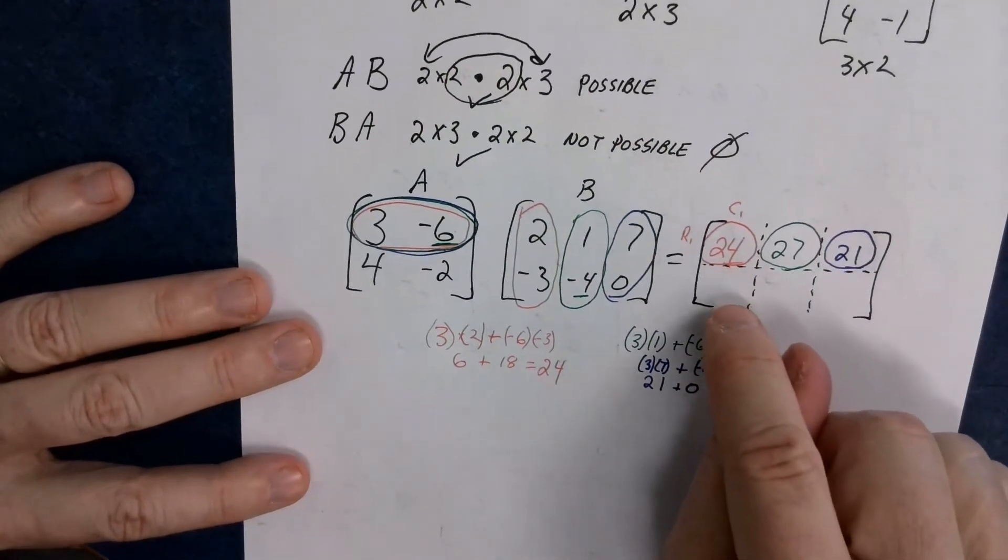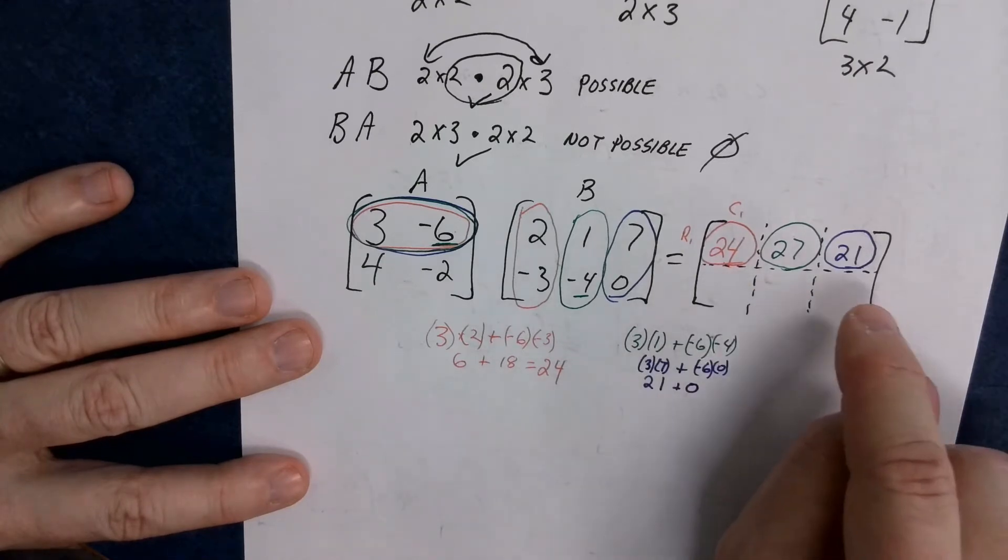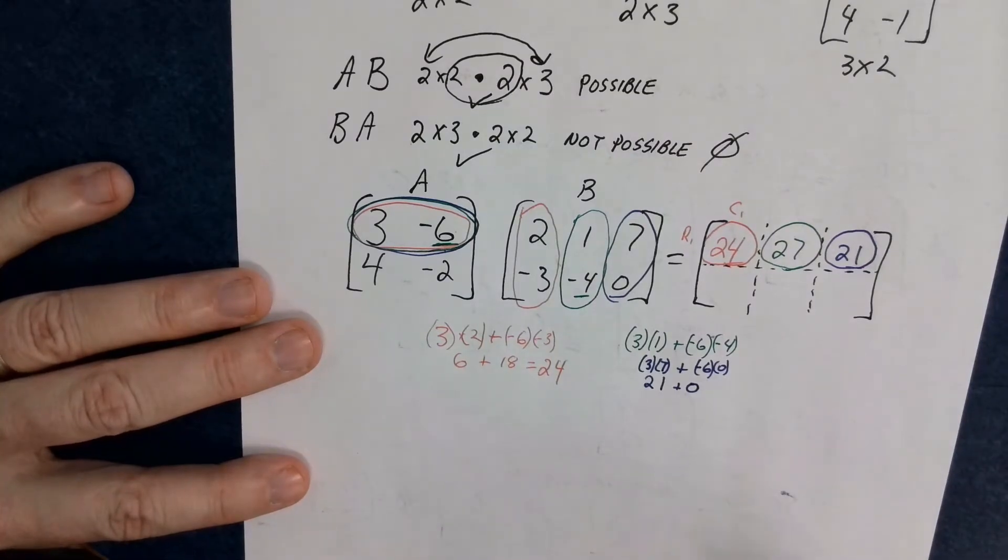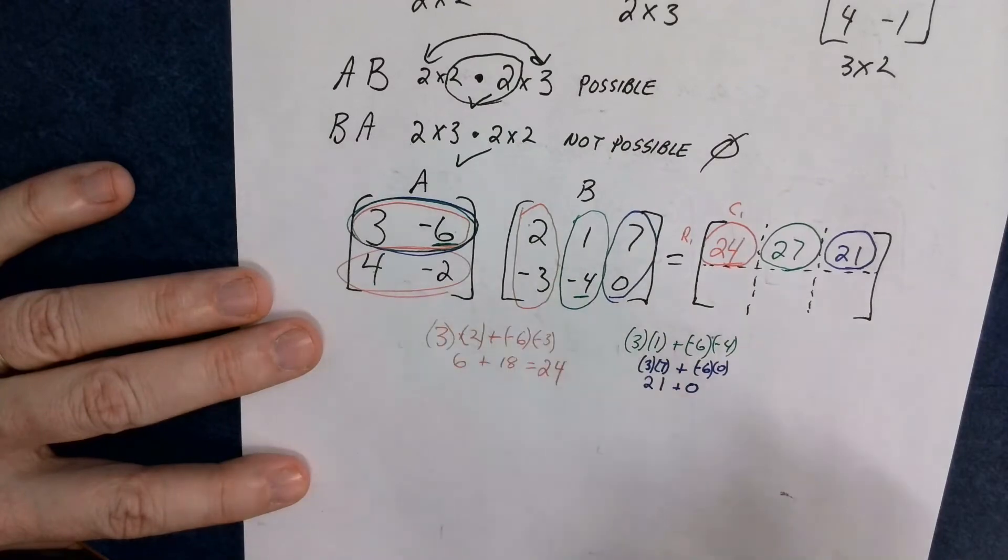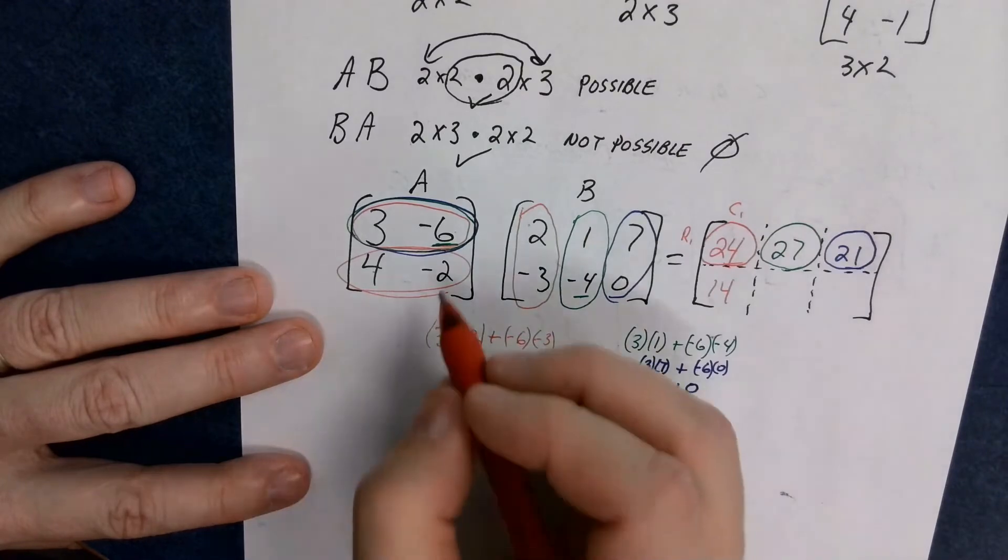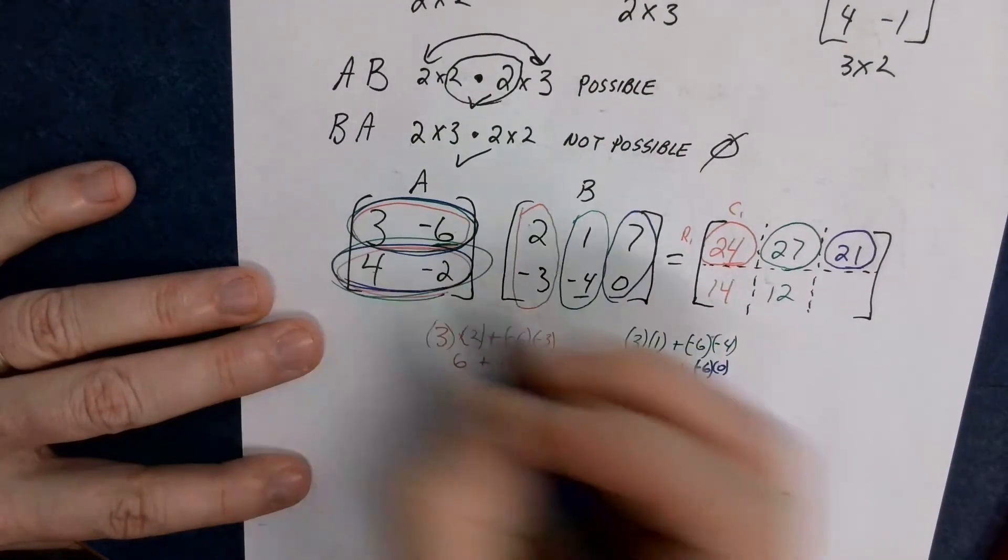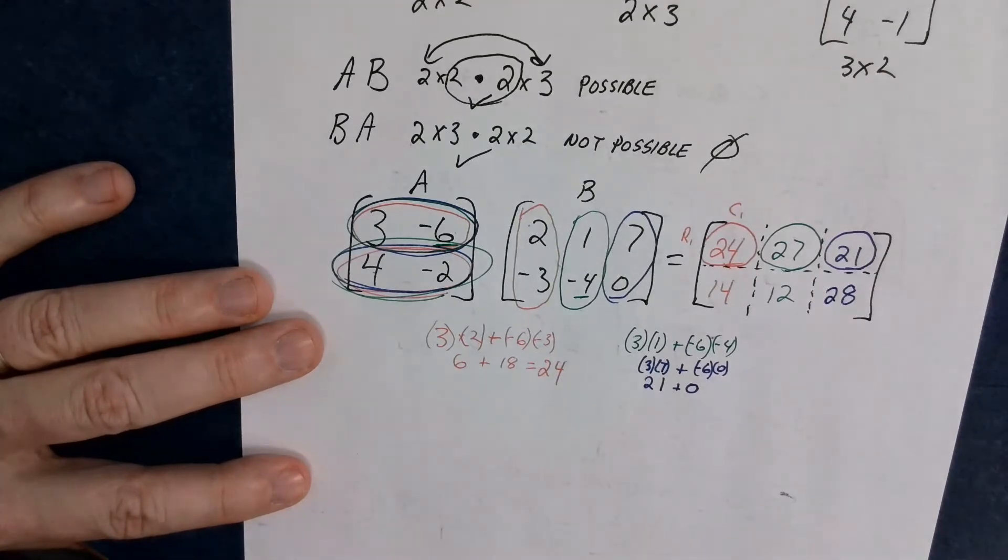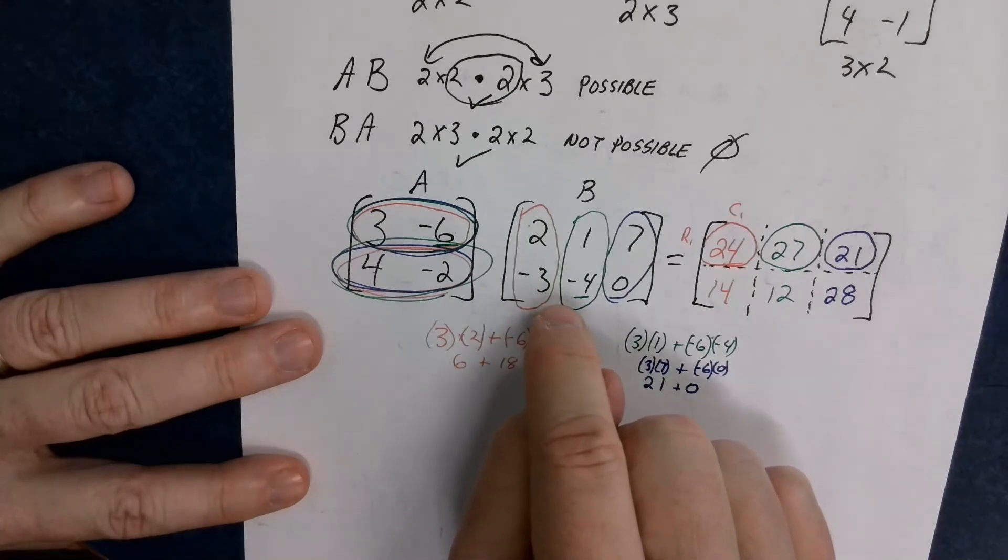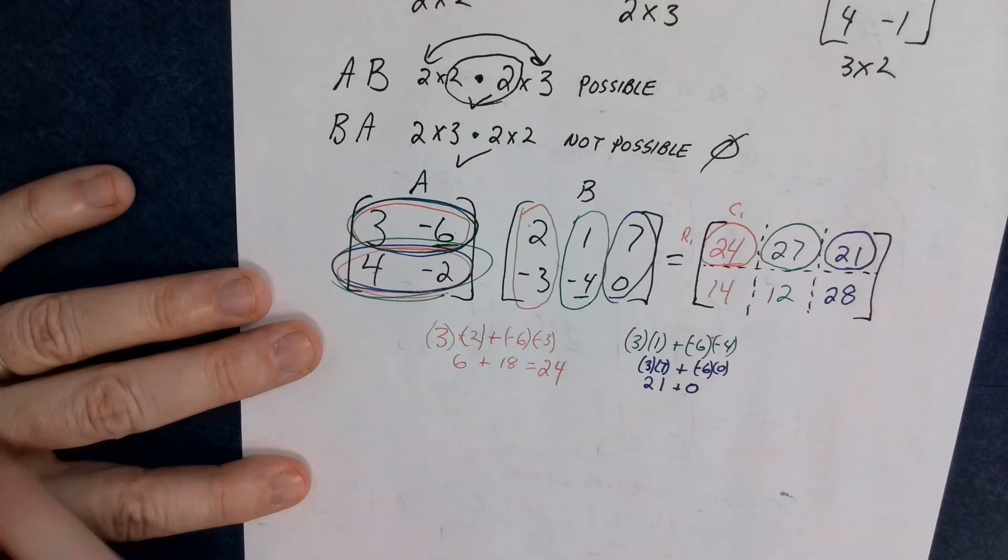So now, if you could, please stop the video again, if hopefully you got 21 right, and see if you can get those three answers. Because this one is row two, column one. This one is row two, column two. This one is row two, column three. Give it a shot. Awesome. Hopefully you're back now. So you're going to take row two, column one. So four times two is eight. Negative two times negative three is positive six. Eight and six is 14. Now you're going to take green with green. Four times one is four. Negative two times negative four is eight. Four and eight is 12. I'm going to take the blues. Four times seven is 28. Negative two times zero is zero. And you get 28. So 14, 12, 28.